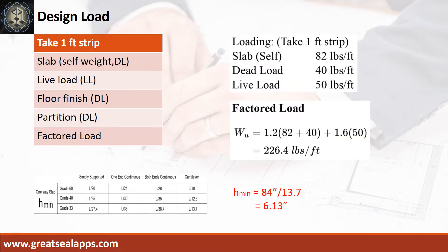The uniform load for a 6.5-inch thick slab is 82 pounds per square foot. Office live load is 50 pounds per square foot. Other dead load, like floor finish and partition, is 40 pounds per square foot, for a total factored load of 226.4 pounds per square foot.